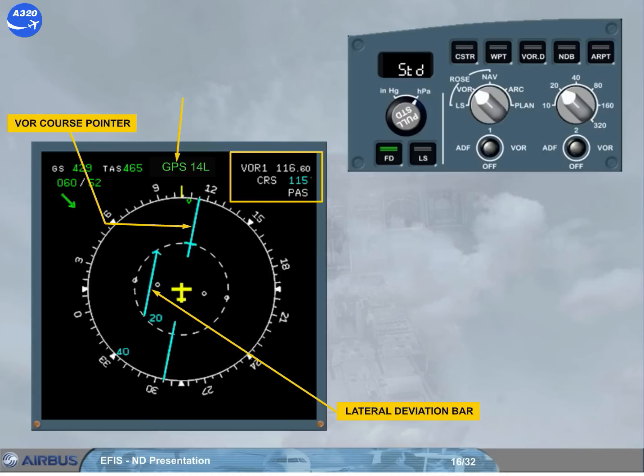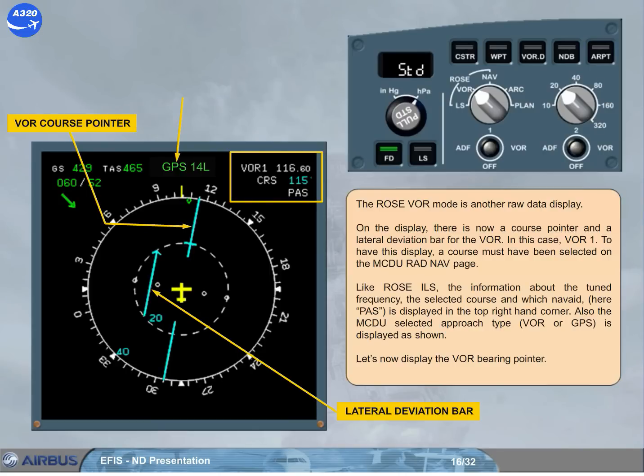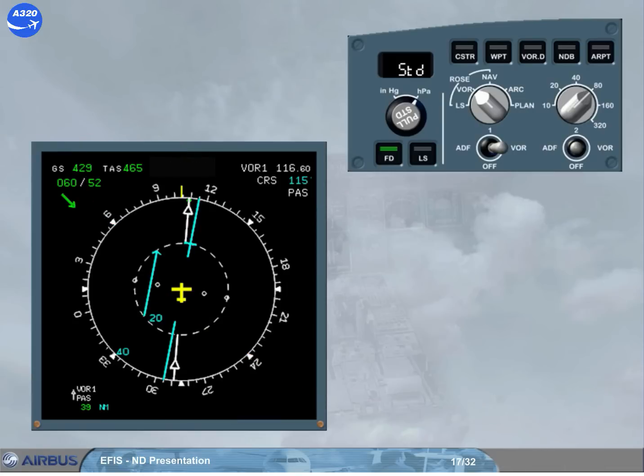Let's now display the VOR bearing pointer. Select VOR1. Notice that there is a white VOR bearing pointer and VOR information associated with the pointer. This information is available even if a course hasn't been selected on the MCDU RadNav page. The number 1 pointer is represented by a single line.